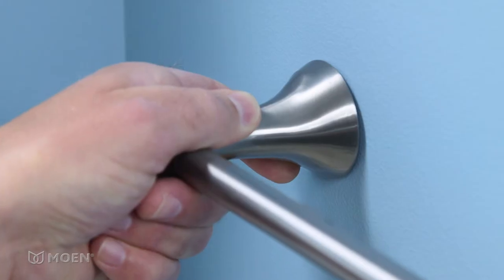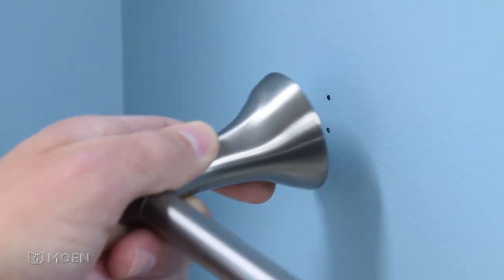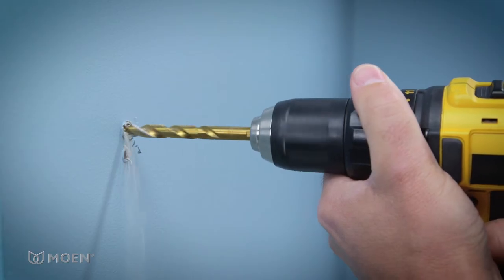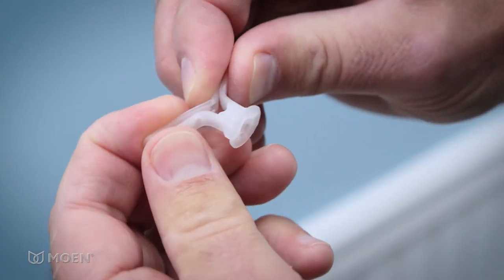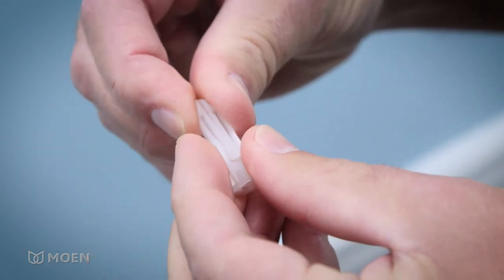In this video, we'll demonstrate just how fast and easy it is to install Moen bath accessories with our Press & Mark innovation. We will install a towel bar into drywall using the included anchors.